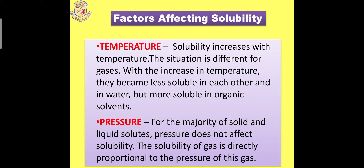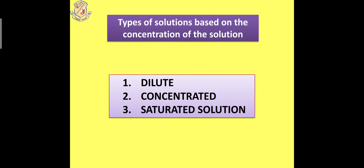Coming to types of solution on the basis of concentration. A dilute solution is one in which the amount of solvent is more than the amount of solute. A concentrated solution is one in which the amount of solute is more than the amount of solvent. A saturated solution is one in which solute is dissolved in a solvent to the maximum amount at a given temperature.